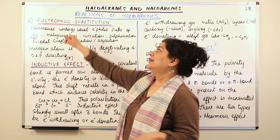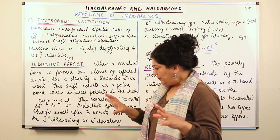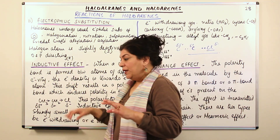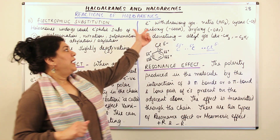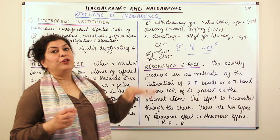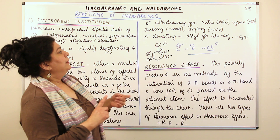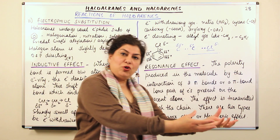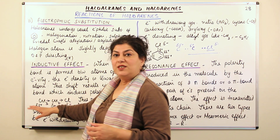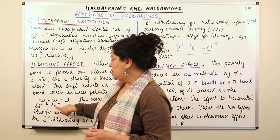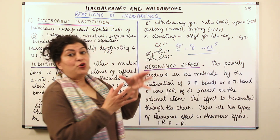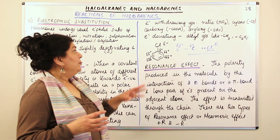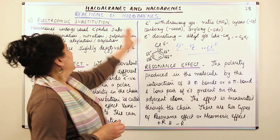Electron-withdrawing groups can be the nitro group, cyano group, carboxy group, aryloxy group, and of course the halogens. Electron-donating groups, which push electrons towards the chain, are examples like alkyl groups such as methyl group and ethyl group. So in the benzene ring of a haloarene, the chlorine is attached and is pulling the electrons towards itself from the ring.